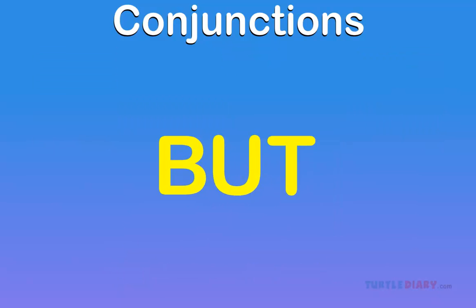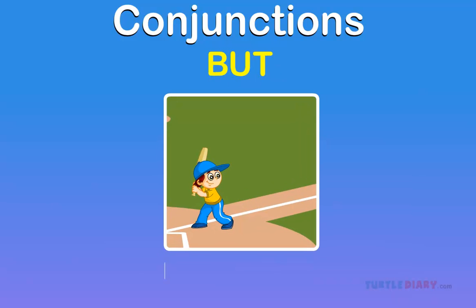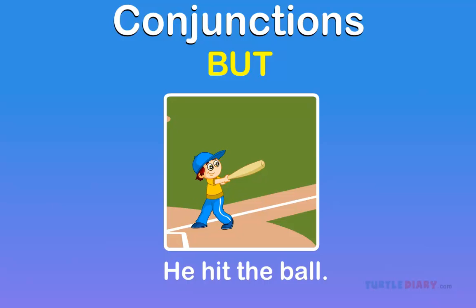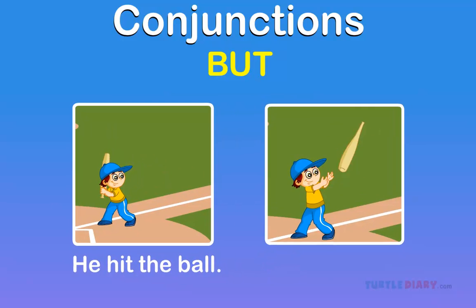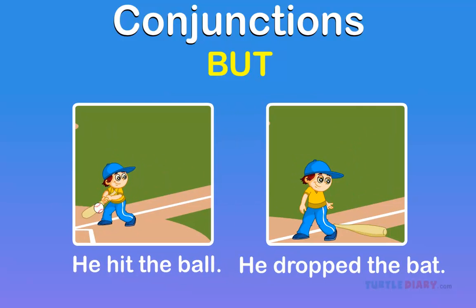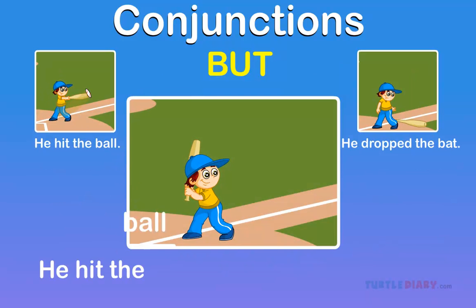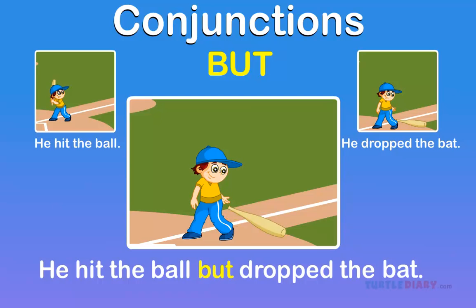But. 'But' is a connecting word that makes a contrast between two words or sentences. He hit the ball. He dropped the bat. He hit the ball but dropped the bat. Here, 'but' is used to join the sentences with unlike ideas.